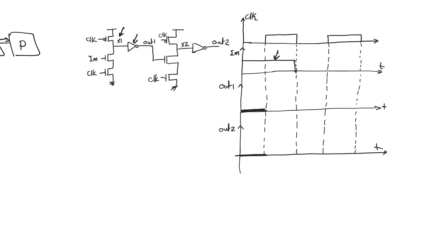What's happening here is that input-one is equal to one. This causes node X1 to discharge down from VDD to zero volts, but out-one is the inversion of X1, so out-one is going to charge up to VDD as X1 discharges. Out-one is going to go up to VDD instead of down. When we look at the input of M2, that input takes some time to reach a value of two V-threshold. This delay is what caused the cascading problem in the first place.